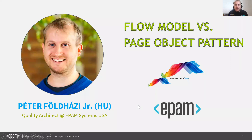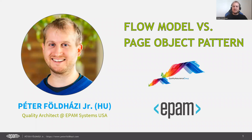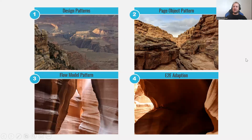I'm really honored to be part of this session today. I hope all of you are going to take away something from today's session. I'm going to be talking about the flow model and the page object pattern and the differences between these two patterns. My name is Peter Feldhazy Jr. I'm originally from Hungary, and right now I live in the USA where I work as a quality architect, which is basically a consultant role. My background is testing, primarily test automation at all levels of the pyramid — UI, API, and even down to unit level.